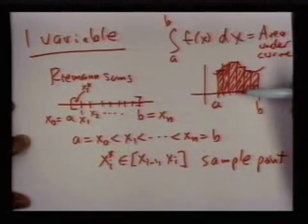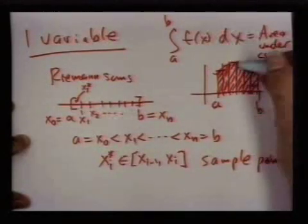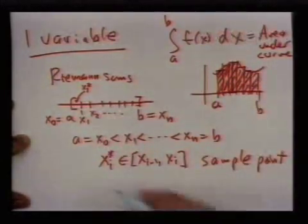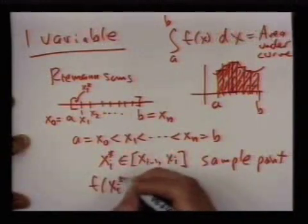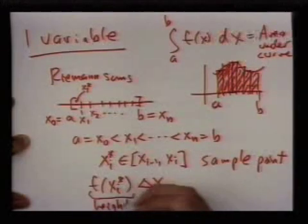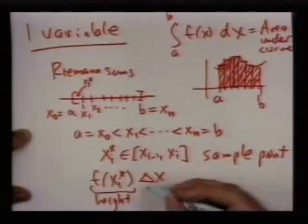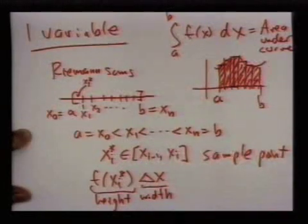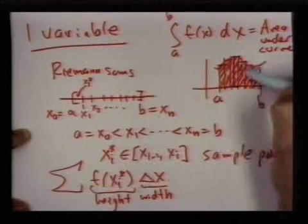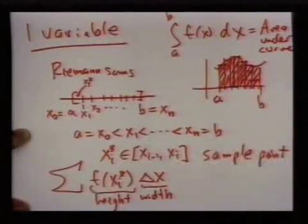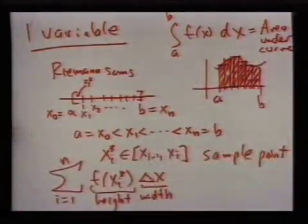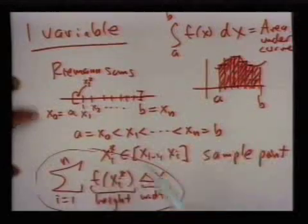And we evaluate the function there that gives us the height of one of these rectangles, and we multiply by the width of the rectangle. So this is the height of the rectangle and the width, and then we go around and add up all of the areas of these approximating thin rectangles. So we have a sum from 1 to n.